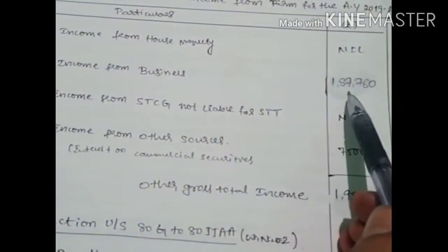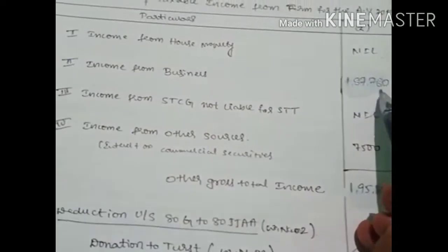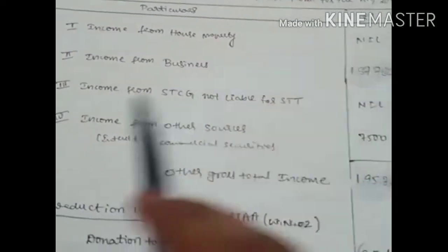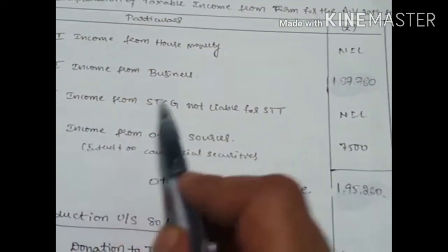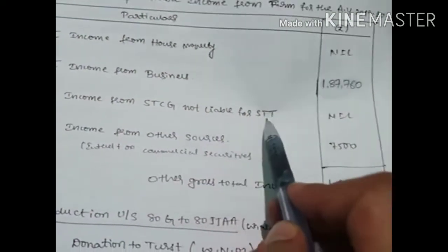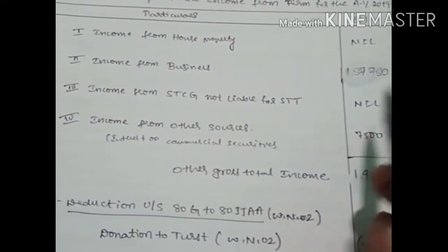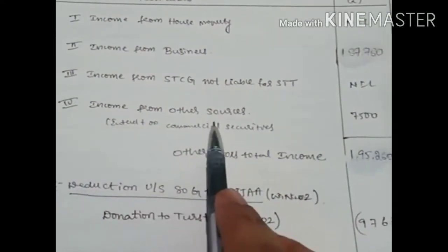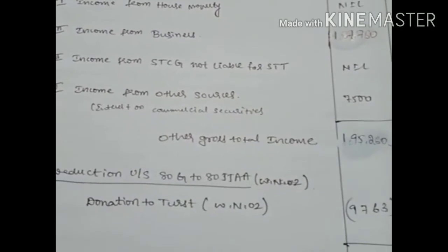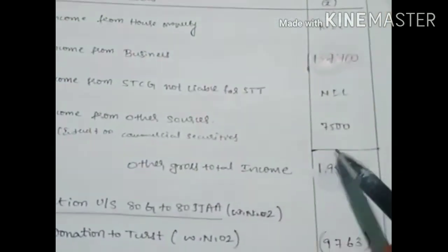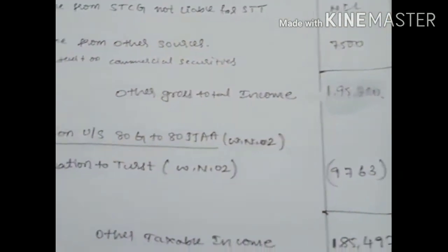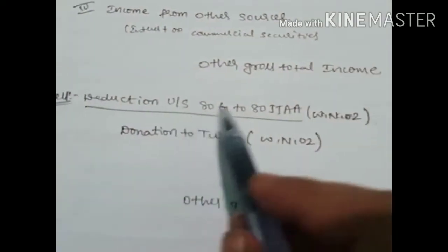Recording under the main format: income from business is 1 lakh 87 thousand 760. Income from short-term capital gain not liable for STT — nothing provided, so nil. Income from other sources: interest on commercial securities of 7 thousand 500. Adding both, gross total income is 1 lakh 95 thousand 260.